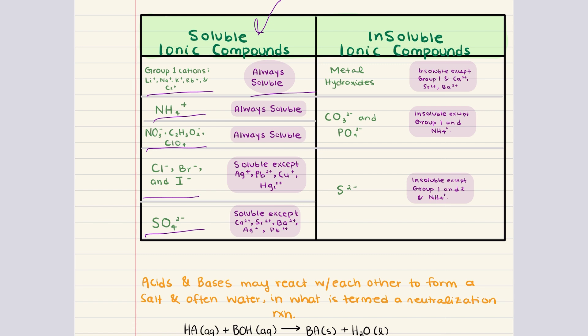What about insoluble ionic compounds? Metal hydroxides are generally insoluble except for those containing group 1 metals and the larger group 2 metals like calcium, strontium, and barium. Carbonates and phosphates are insoluble except when paired with group 1 metals or ammonia. And sulfides are typically insoluble except when combined with group 1 or 2 metals and ammonium.